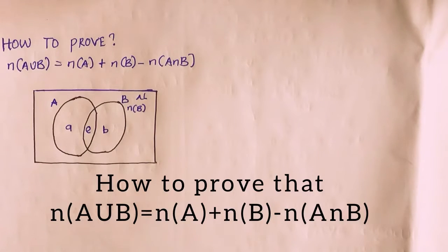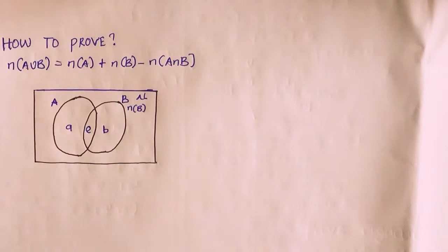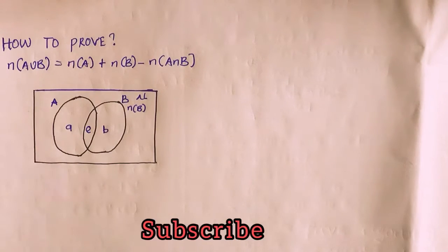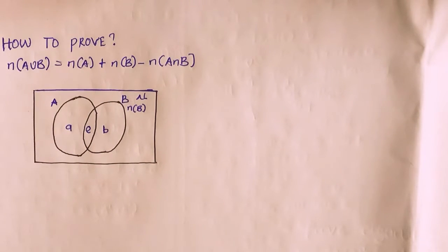Hi friends. In this video I'm going to prove that cardinality of A union B equals cardinality of A plus cardinality of B minus cardinality of A intersection B. I'm going to prove it using the Venn diagram method.